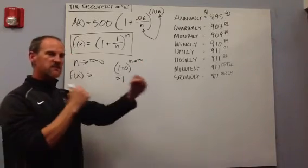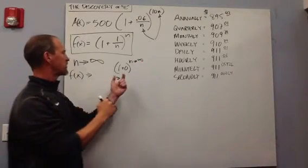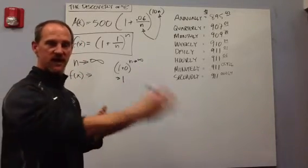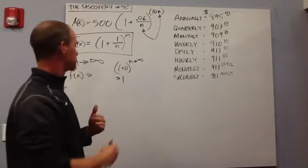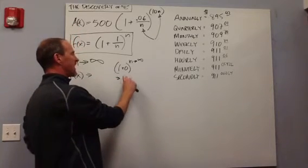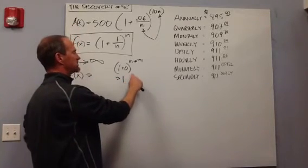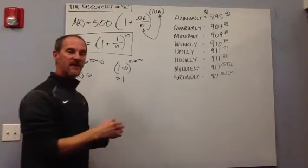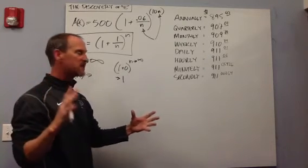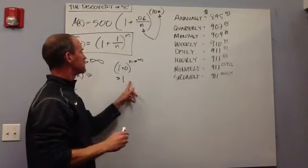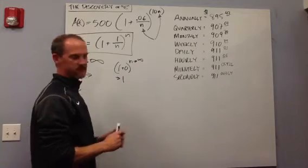It's a big tug of war: 1 raised to a large exponent is just 1, because 1 times itself an infinite number of times is 1. But if I have a little bit more than 1 raised to an infinite power, that tends to explode towards infinity, even if it's just a little bit more than 1. So what's going to happen?